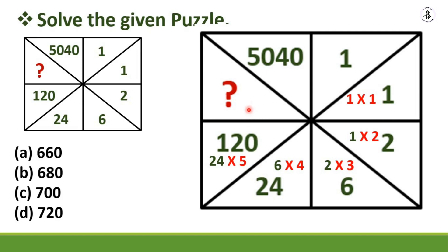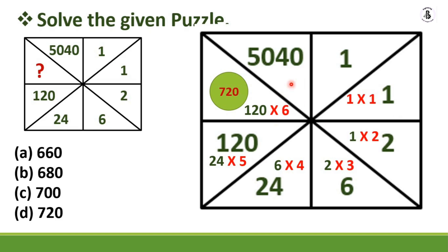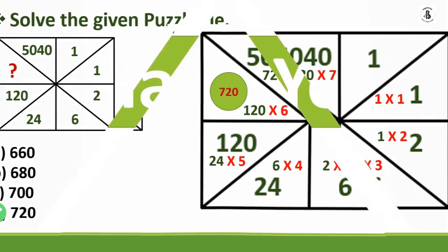Following the same pattern: 120 multiplied by 6 gives 720. Note that 720 multiplied by 7 would give 5040, but the question mark in this puzzle is 720. So the right answer is 720, which is option D. If you like this, please subscribe and share. Thank you so much and keep watching.